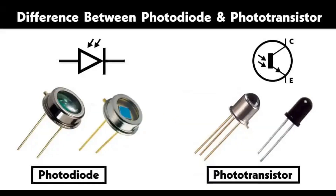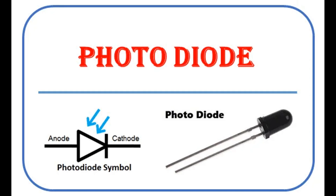Environmental sensing: Solar radiation sensors measure the intensity of sunlight, providing data for solar energy systems and climate studies. UV detectors are used to monitor ultraviolet radiation levels, important for environmental monitoring and personal UV exposure.